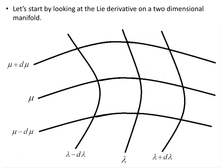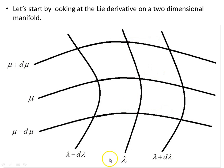Let's start by looking at the Lie derivative on a two-dimensional manifold. Here's our two-dimensional manifold, and you can imagine these lines in the direction mu, and these lines in this direction lambda. If it helps, think of this as a Cartesian plane, where this is y equals two, or some other number — y equals two lines.